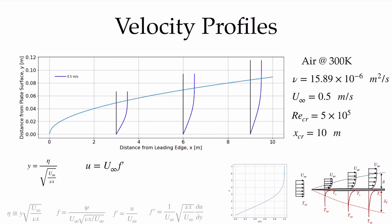At x = 6 m, the y values are different for the same eta values — the profile stretches out with the boundary layer thicker at that point, with 99% of free stream occurring further out. At x = 9 m, it stretches further still, recovering the two-dimensional velocity field in dimensional parameters.